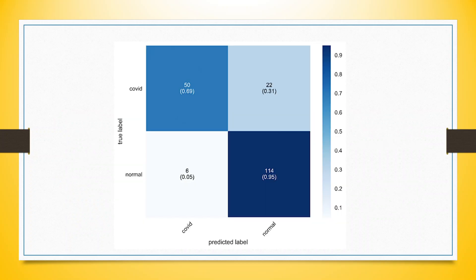After we create the model, it is necessary that we test its accuracy, and the accuracy is tested with the help of a confusion matrix. For example, say a person is infected with COVID and the kit also detected that the person is having COVID — 50 such cases are there. It means that the classification is appropriate.